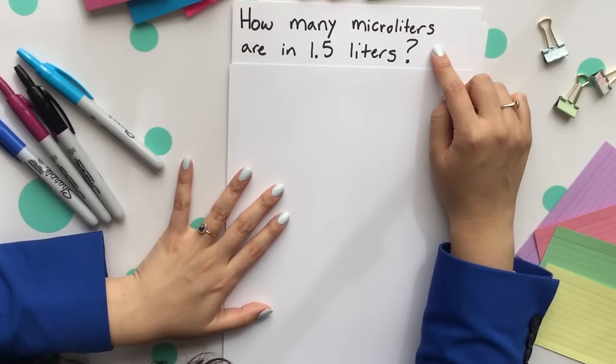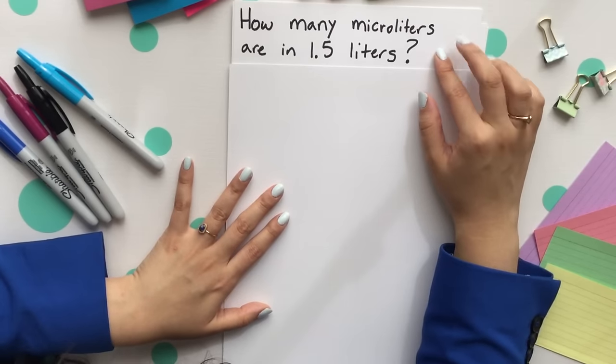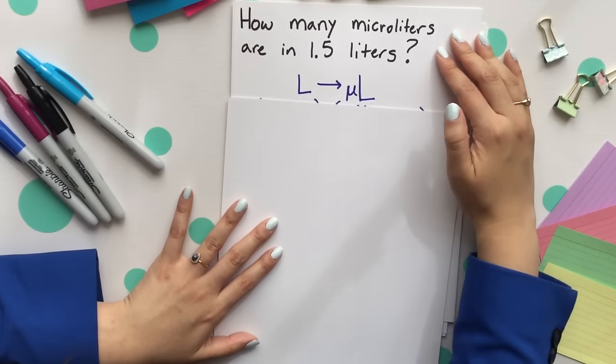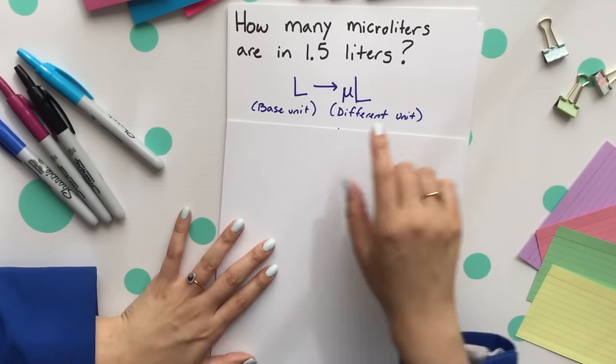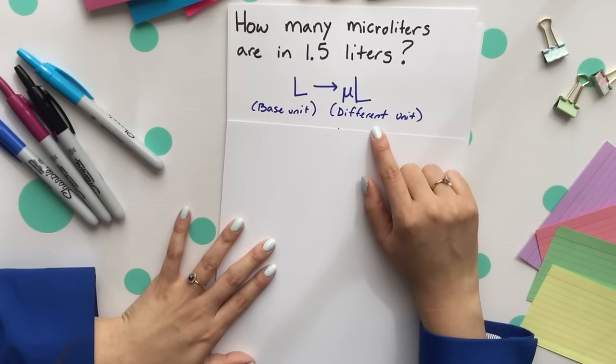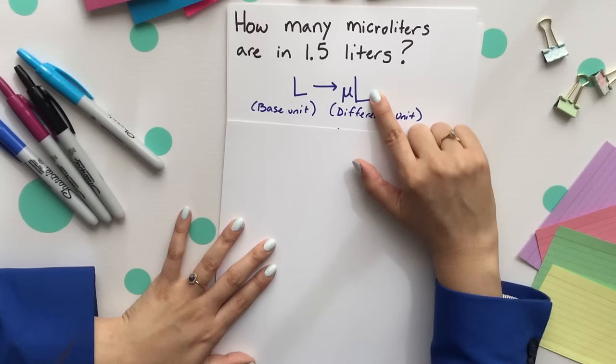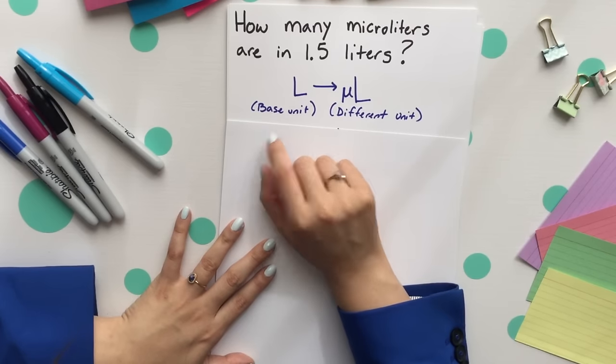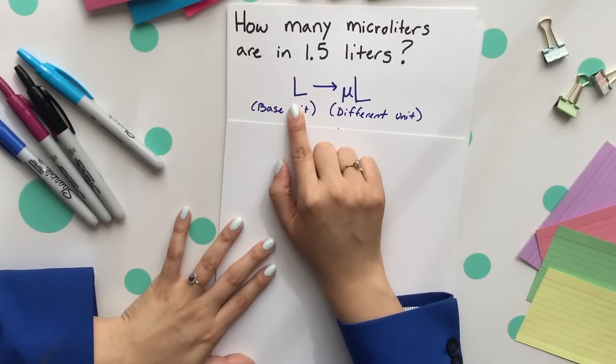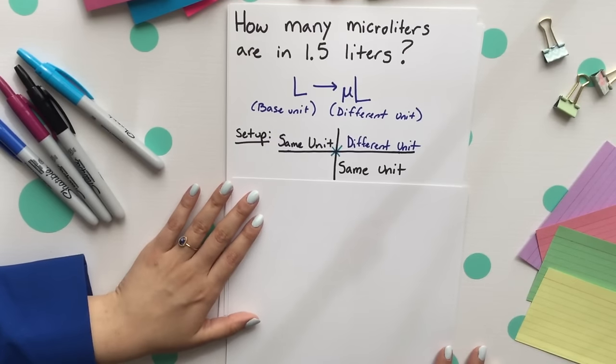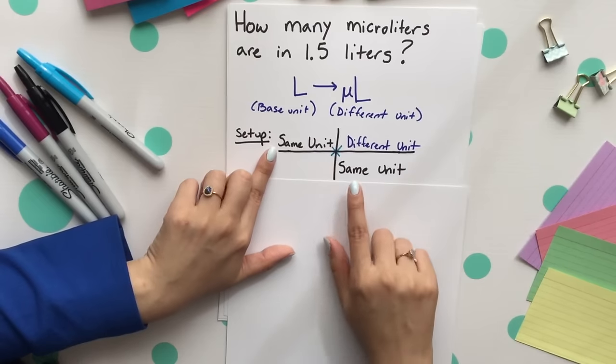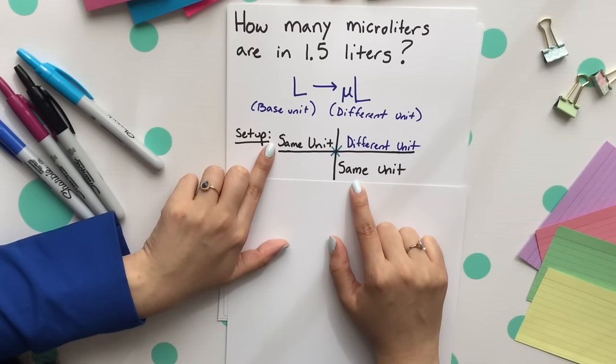Let's practice a few problems together. How many microliters are in 1.5 liters? Our game plan here is going from liters to microliters. Our base unit is the liters and our different unit is the microliters. So our base unit will have that 10 to some sort of power and the micro will have the one.